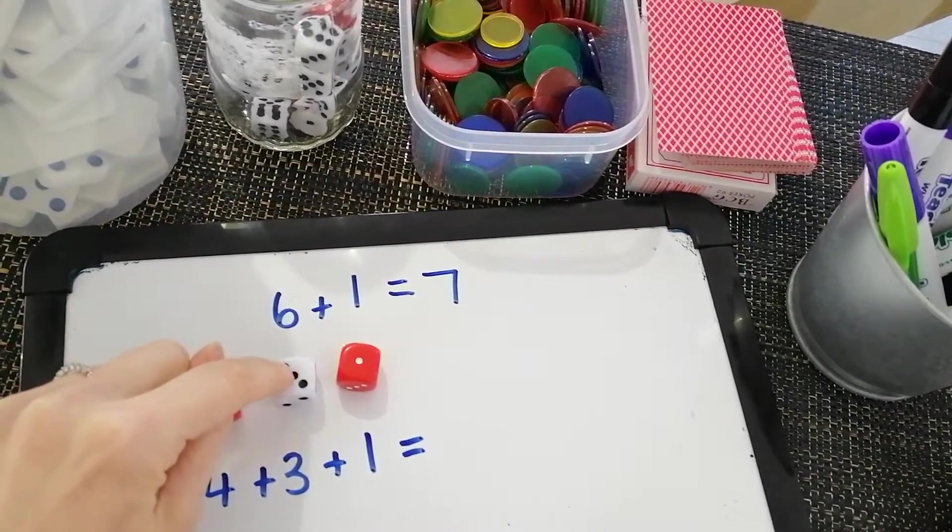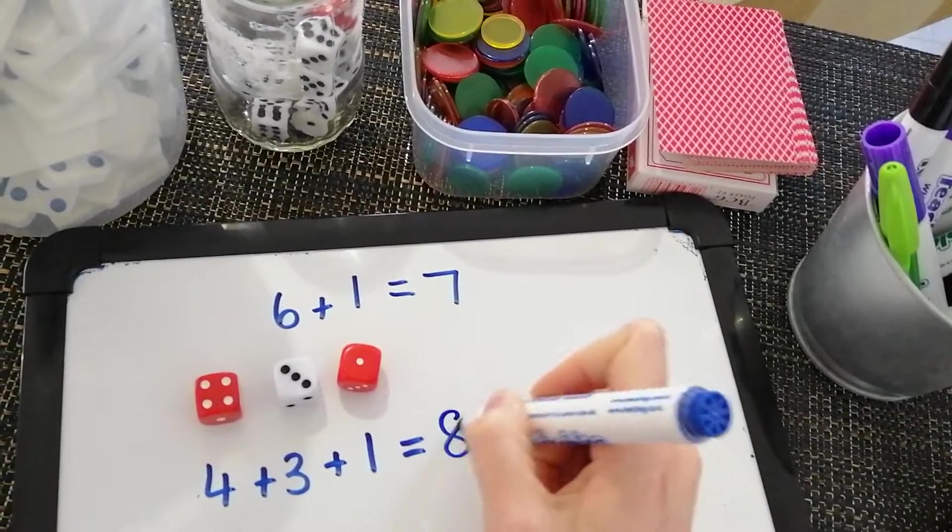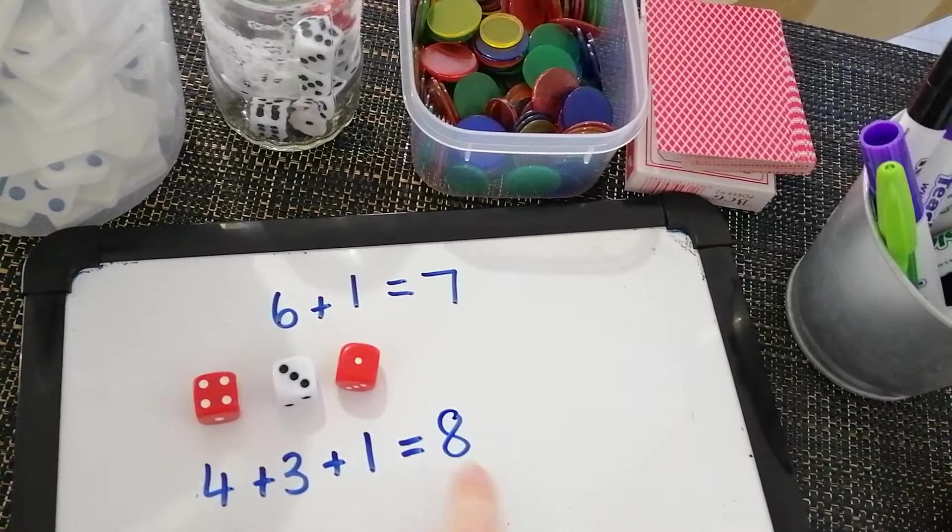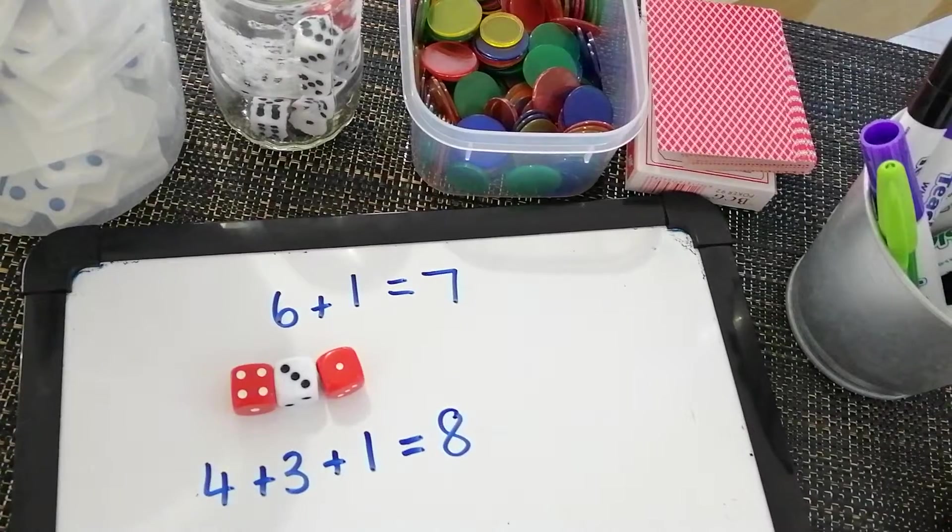Counting each dot once. Five, six, seven. Lock it in. Eight. So my addition sentence was four plus three plus one and my answer was eight. A total of eight dots all together on my dice.